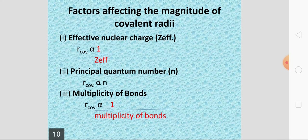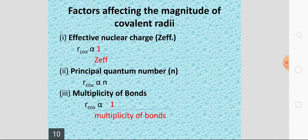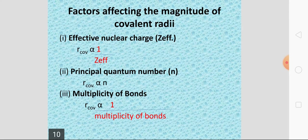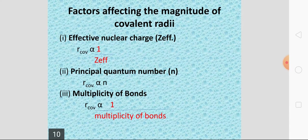Factors affecting the magnitude of covalent radii: The first factor is effective nuclear charge. Covalent radius is inversely proportional to the effective nuclear charge (Z_eff). As Z_eff increases, the covalent radius decreases, because the nucleus pulls electrons more strongly, causing the atom to shrink, and the atomic radius will decrease.